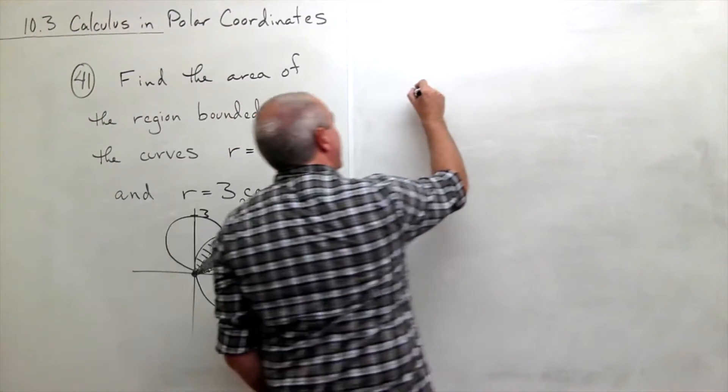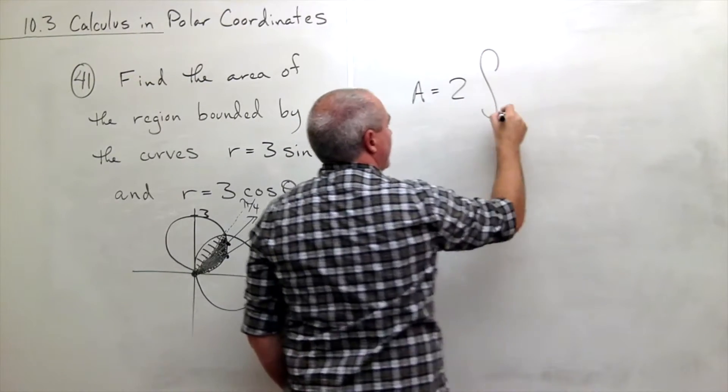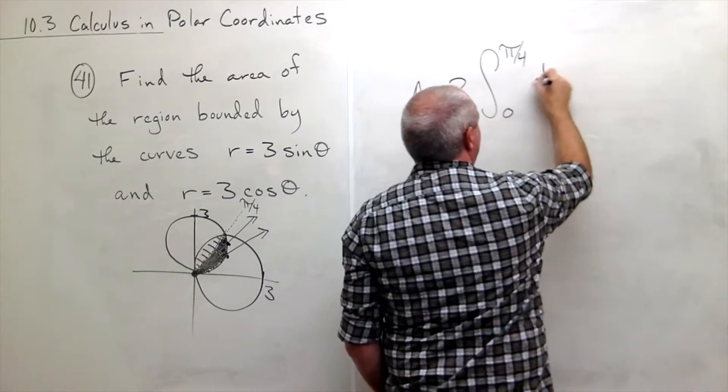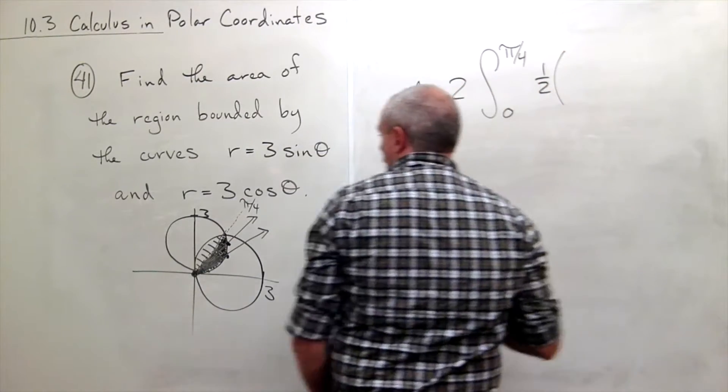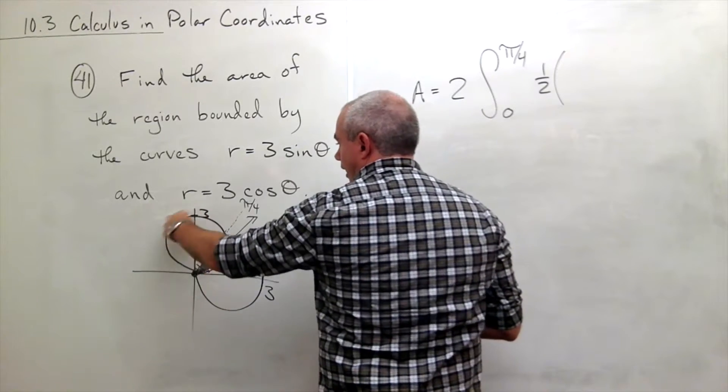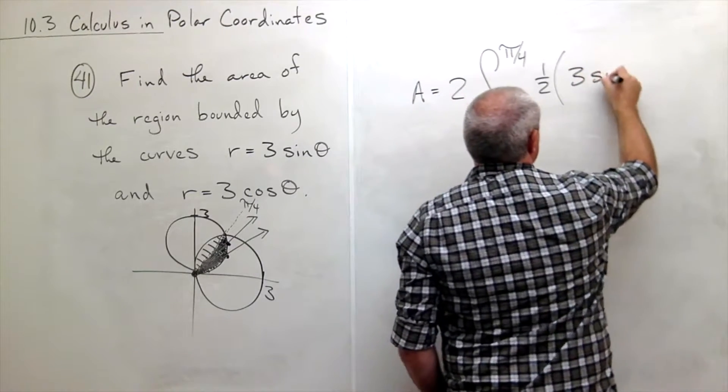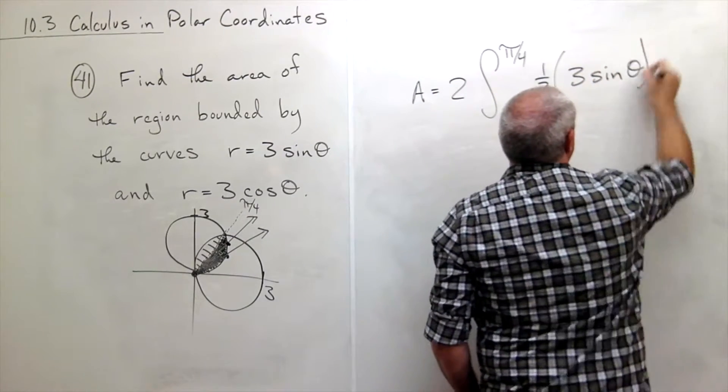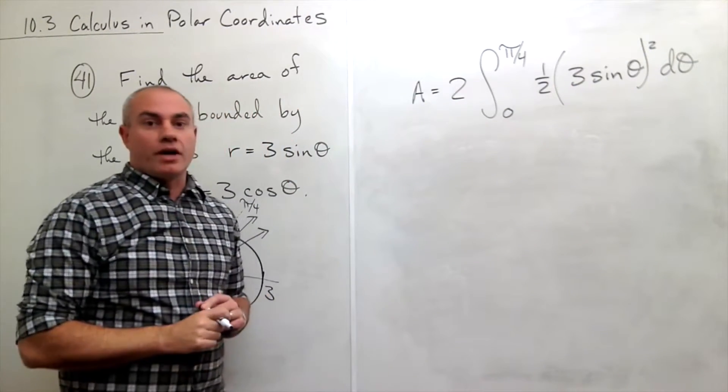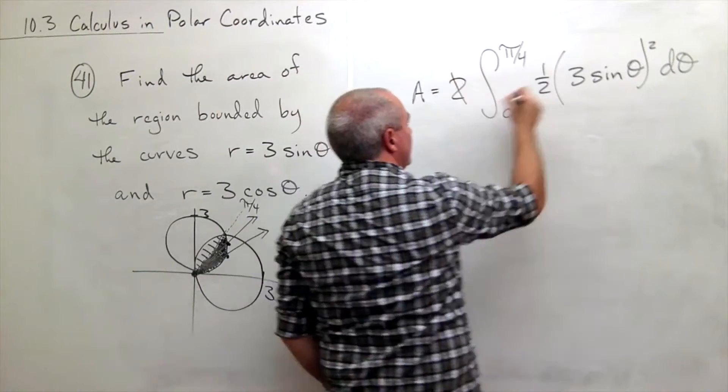So the area of the region I'm looking for is I'm going to double integrating from zero to pi over 4 of one half of r. But in this case, the only function I'm dealing with is this upper circle, which is r equals 3 sine theta. So this is 3 sine theta quantity squared d theta. Again, I have the two on the outside, the one half on the inside. They cancel.